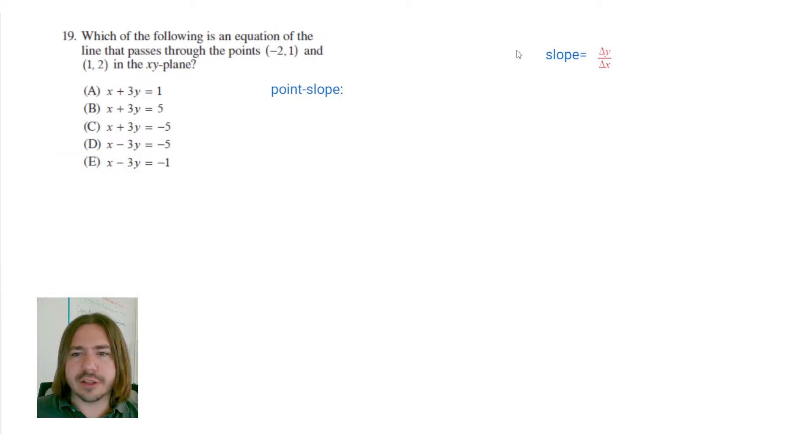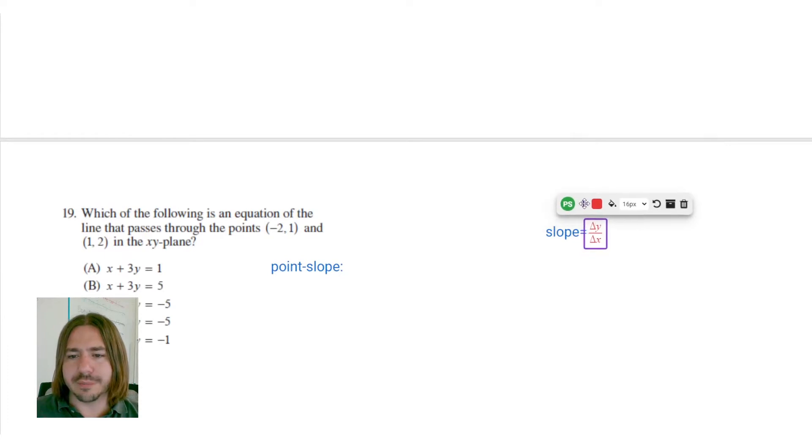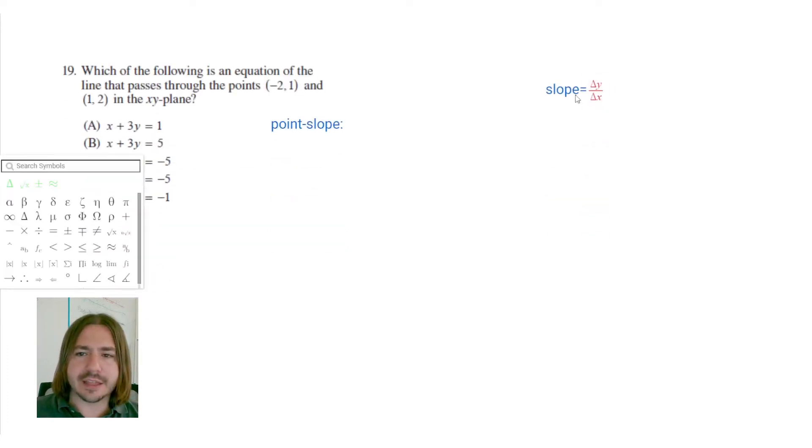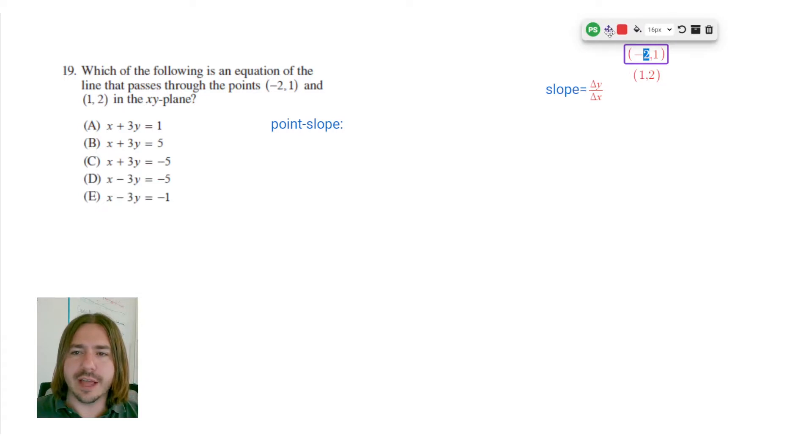So the way that I like to calculate slope, and there is a formula for it—it's y2 minus y1 over x2 minus x1—but I'm not really a big formula guy unless you have to use one. Instead, I like to think about it like this. So if the two points I know are (-2, 1) and (1, 2), instead of trying to plug everything into a formula and simplifying it, I can just ask myself, how do I get from one point to the next? What do I have to add to the y's? What do I have to add to the x's? And that will be our change in y and change of x.